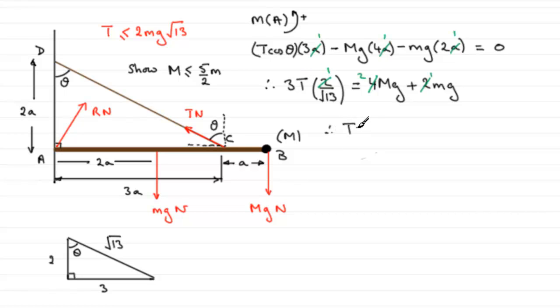So, therefore, we have T equals √13 over 3, multiplied by what we have on the right here. 2 big Mg, plus mg, there, little mg.